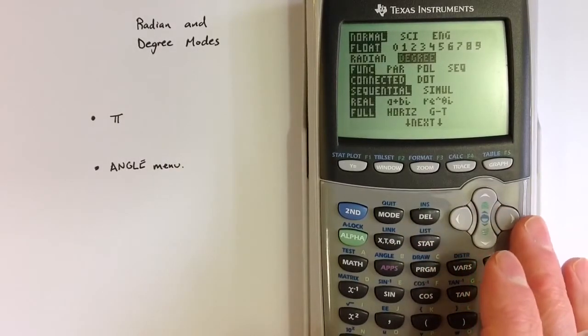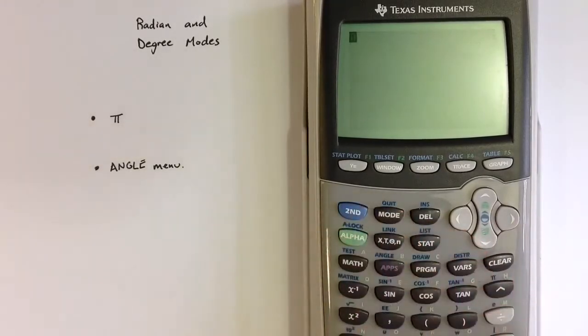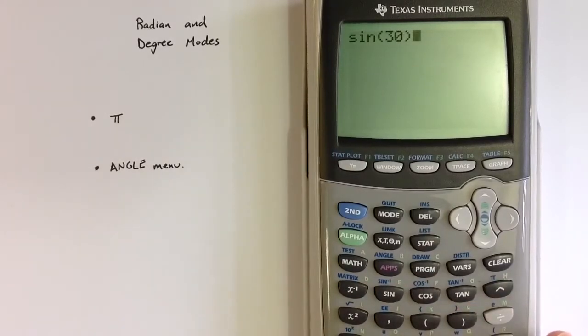In degree mode, values entered into the calculator will represent degrees, so we could say the sine of 30. That corresponds to the sine of 30 degrees, and we get 0.5.